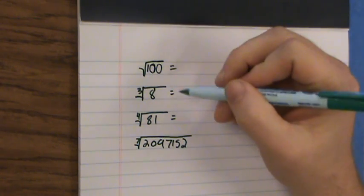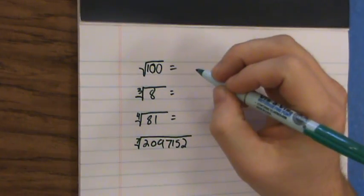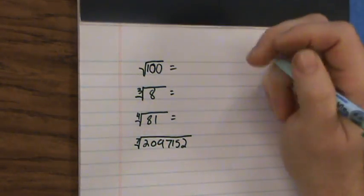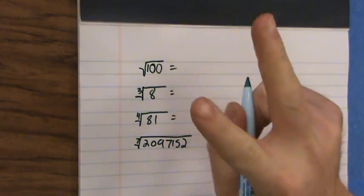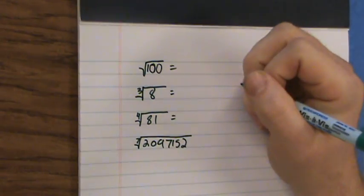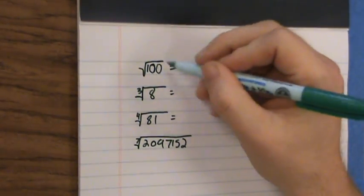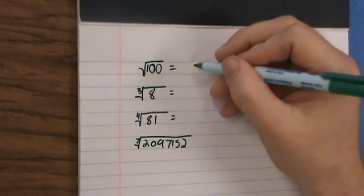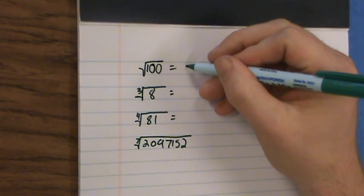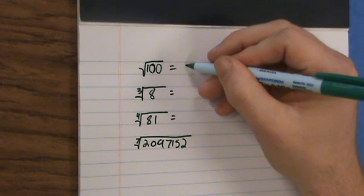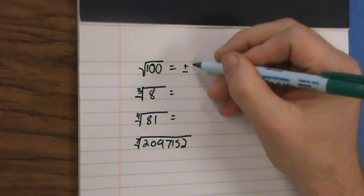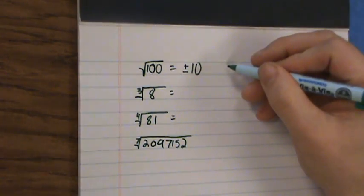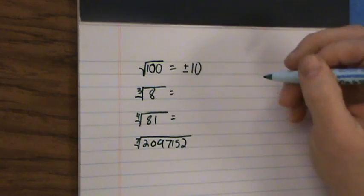The square root of 100 means what's the number that multiplies by itself two times — because it's the second root, the square root — that makes this number, 100. So two numbers actually do this: positive and negative 10. Both of those multiply by themselves twice to make 100.